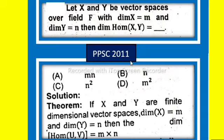Then dimension Hom(X,Y) is equal to what? The solution uses the theorem: If X and Y are finite dimensional vector spaces, dimension of X is equal to m and dimension of Y is equal to n, then the dimension of Hom(U,V) is equal to m times n.